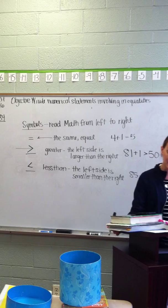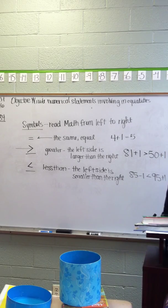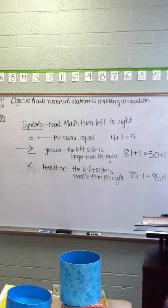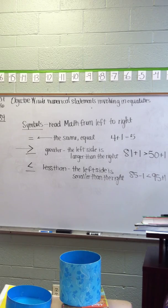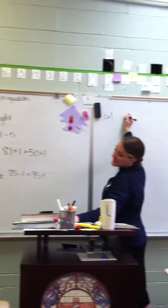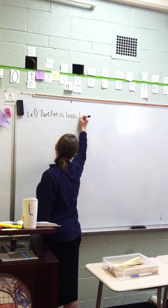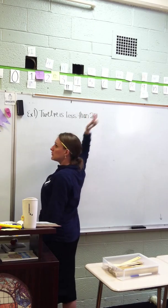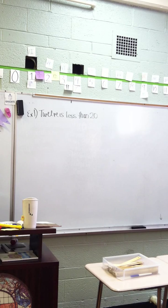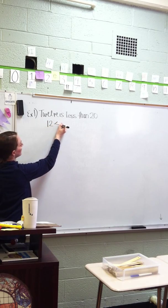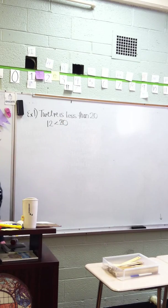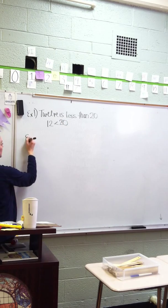Alright. We will do whiteboards. Whiteboards. We will, we are, we will do whiteboards in a minute. Let me write three examples. No. Four little examples in your notebook to help you. Alright. Example one. Sam, if you can follow me. Alright. Twelve is less than twenty. So if you see the statement twelve is less, write this down, than twenty. How do you write this as a numerical statement?